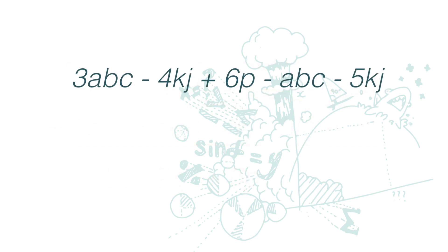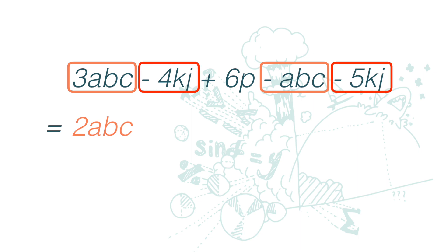Of course we can do it in a faster way. Straight away we can see that 3abc and negative abc are like terms. So 3abc minus abc is 2abc. Negative 4kj and negative 5kj is negative 9kj. 6p is maintained as it is.